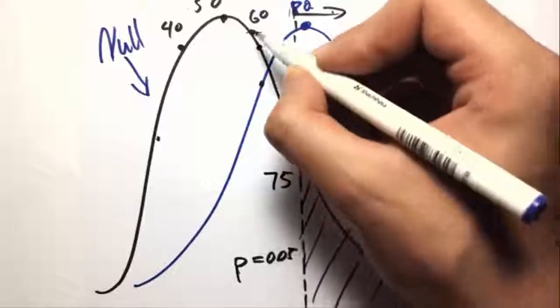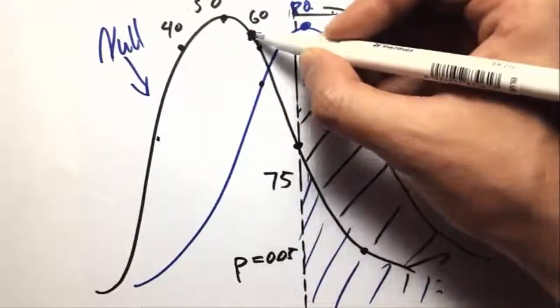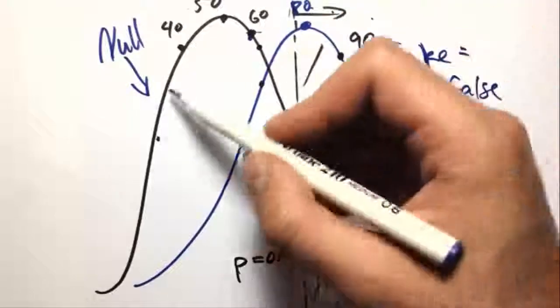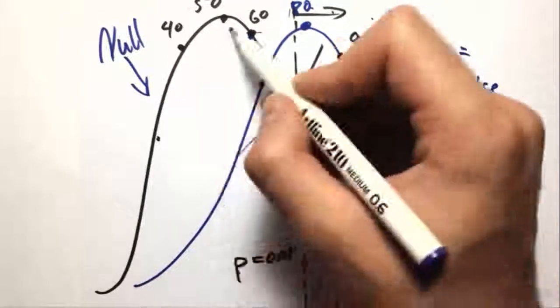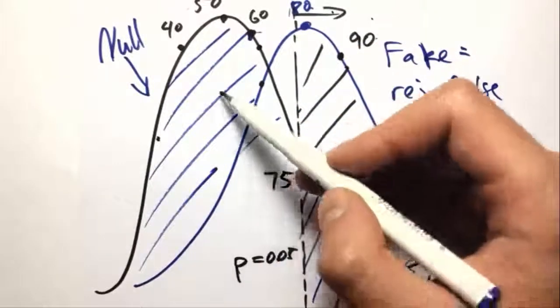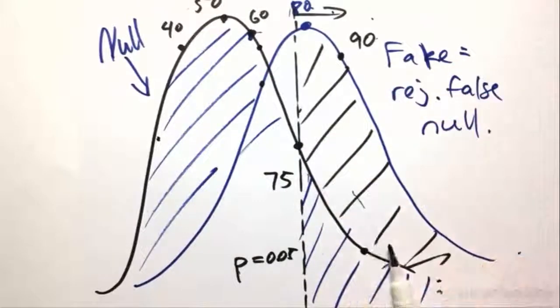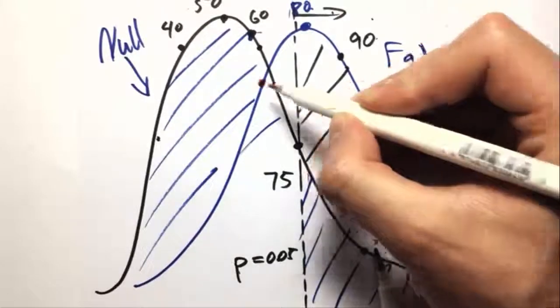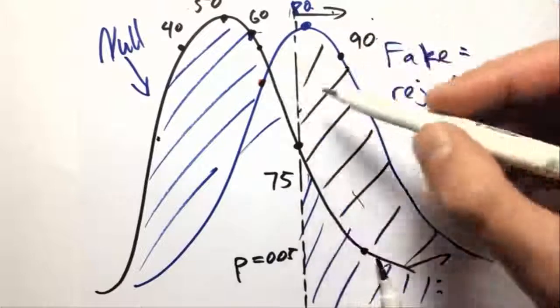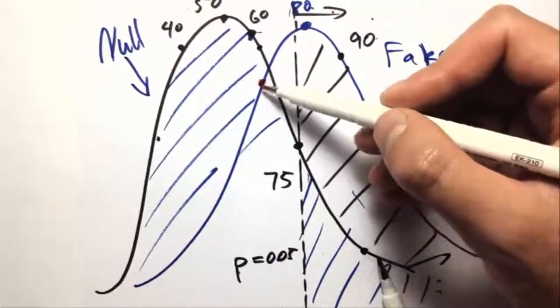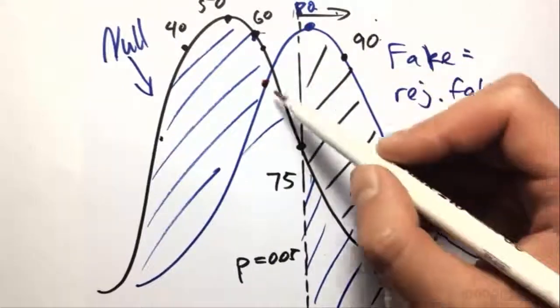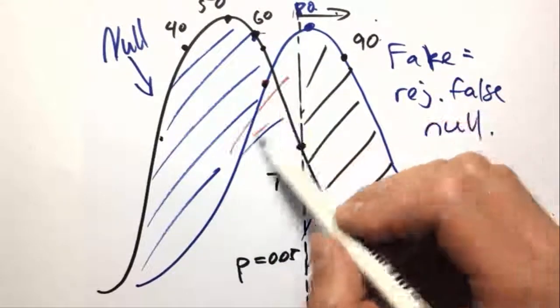but actually it's not. And it's a fake coin, but it's just by chance that it got 60 and not 80. We missed out on this whole section here.